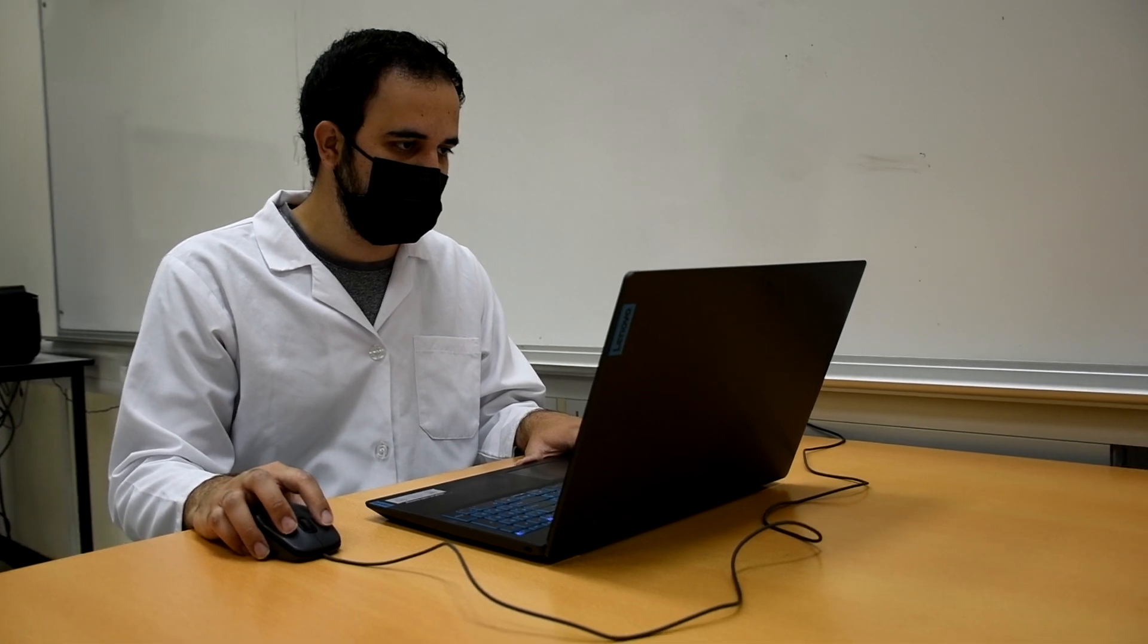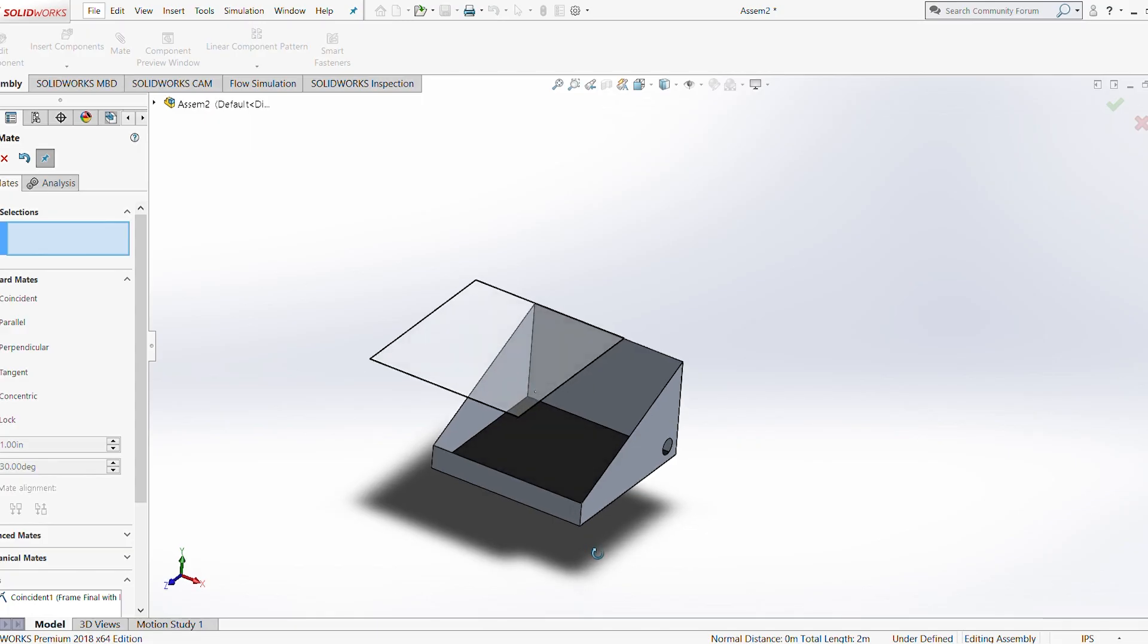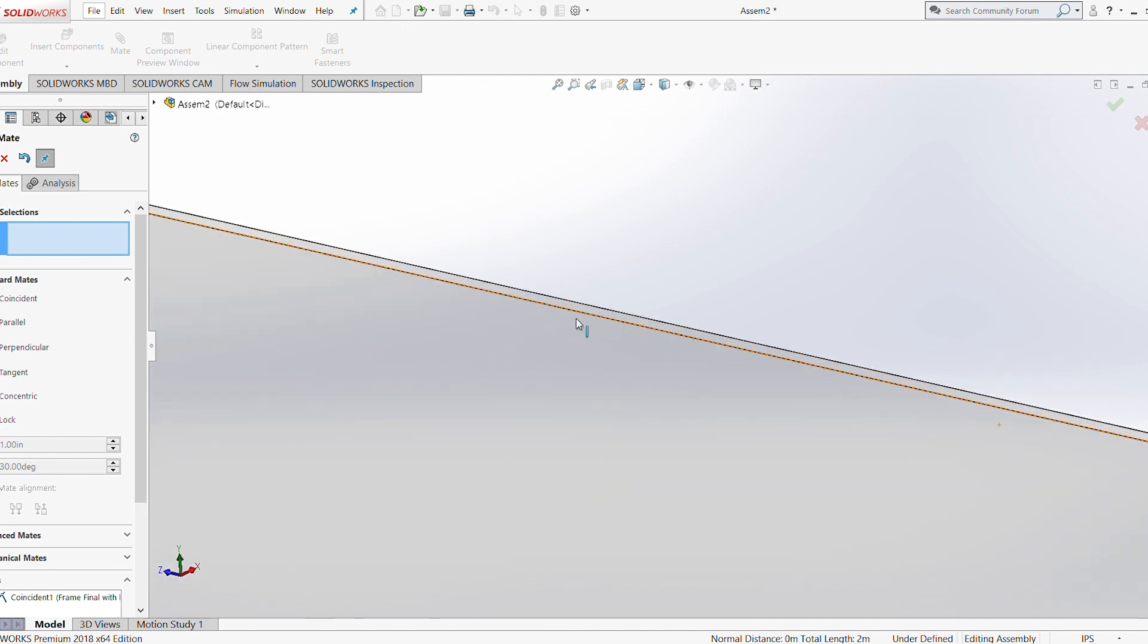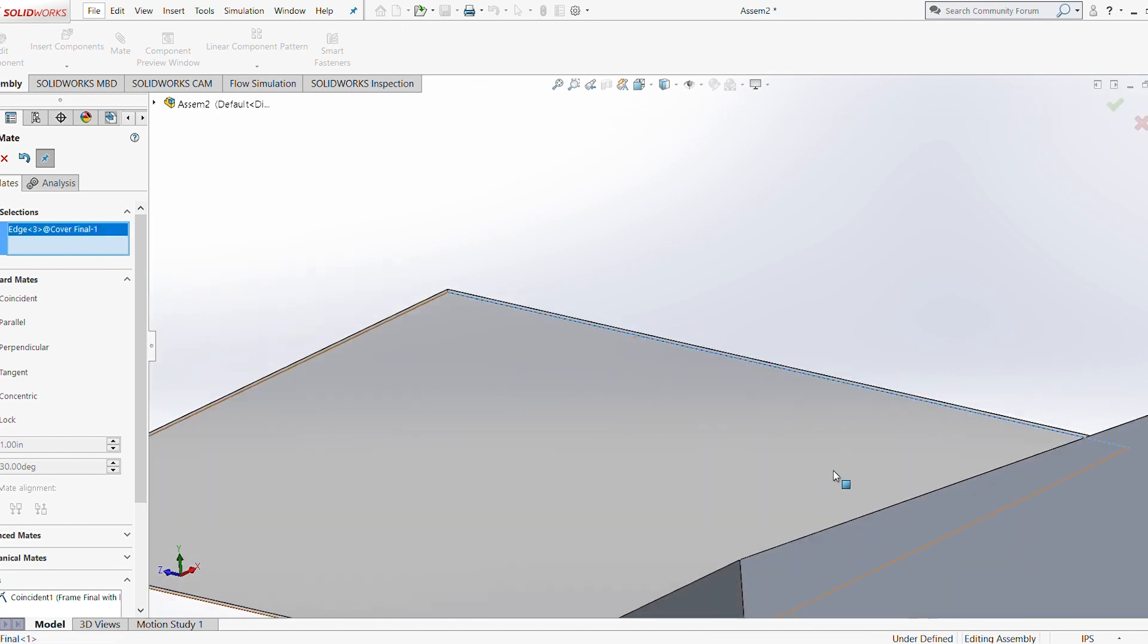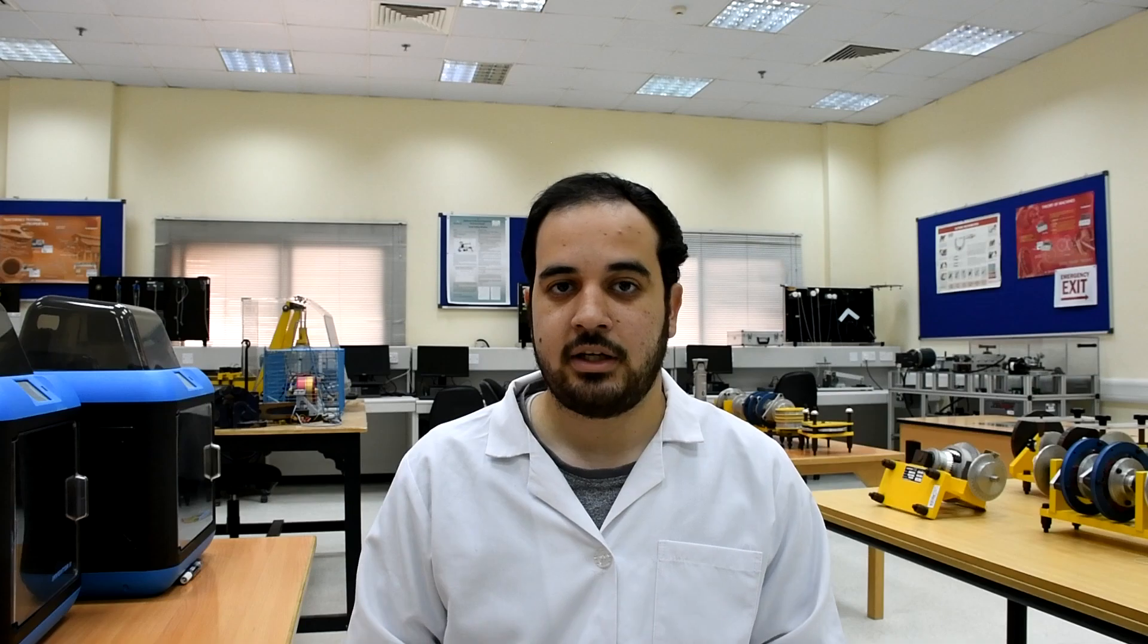So, after we selected the materials, we managed to design our system and components on SolidWorks. We also assembled them and we made sure that the design is around a 1 square meter area and using aluminum, we made sure that it is lightweight, which creates an easy task for transportation.